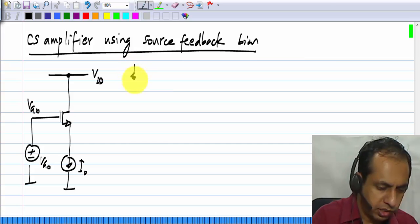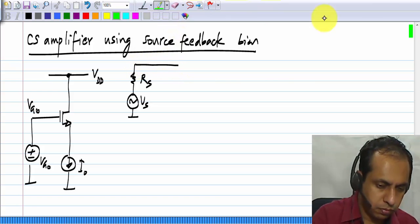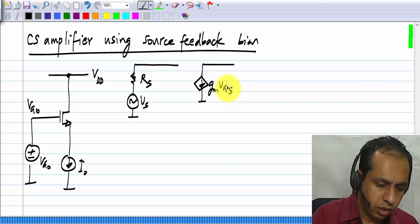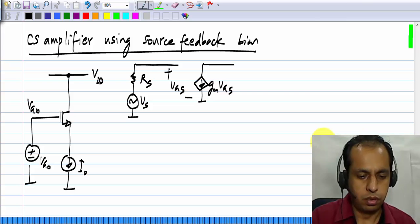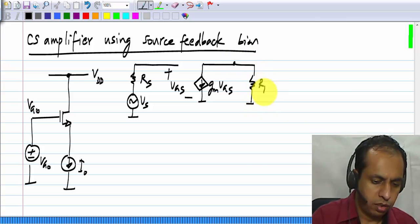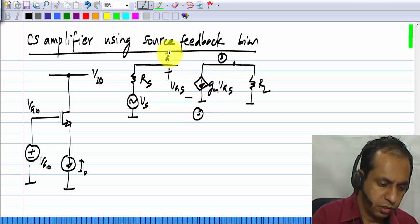The common source amplifier looks like this. The signal is applied between the gate and source, and the output is taken between the drain and source. This is the drain, this is the source, and this is the gate.